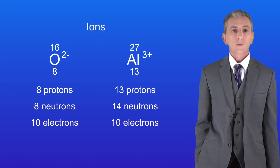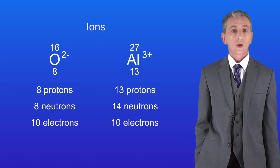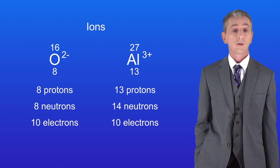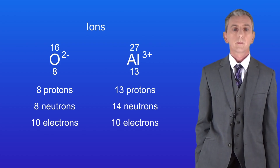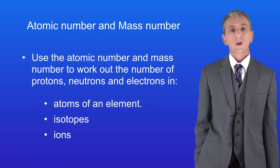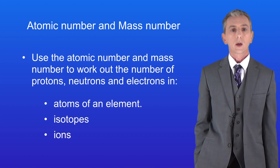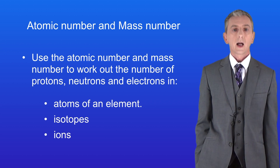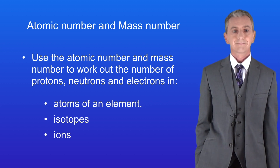Remember you'll find lots more questions on using atomic numbers and mass numbers in my revision workbook which you can get by clicking on the link above. Hopefully now you should be able to use the atomic number and mass number to work out the number of protons, neutrons and electrons in atoms of an element, isotopes and ions.